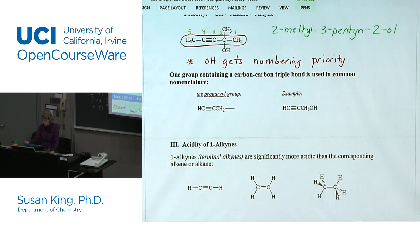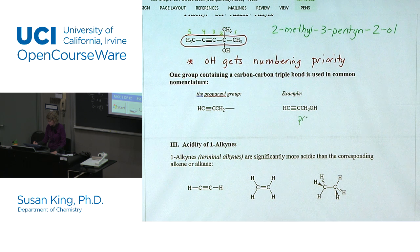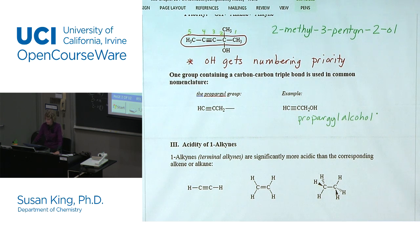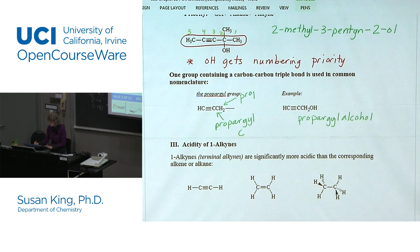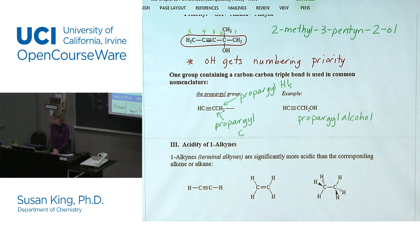There's one group containing a carbon-carbon triple bond used in common nomenclature: the propargylic group. This is propargylic alcohol. It's similar to allylic — in allyl you have a CH2 bonded to an alkene; here you have a CH2 bonded to an alkyne. The propargylic carbon is the carbon adjacent to the triple bond, and those hydrogens are propargylic hydrogens. Very much like allylic carbons and allylic hydrogens.